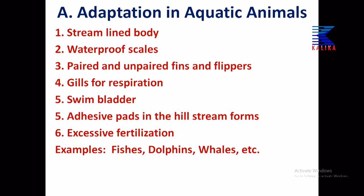Some hill-stream fishes and forms have adhesive pads on the abdominal part or around the mouth, so they are able to attach to stones and rocks and not be washed away by strong upstream currents. They have excessive fertilization — a lot of eggs and a very high degree of fertilization in the water. That is external fertilization. Why excessive fertilization? Because there is a high chance of mortality; if even a small percentage survives, there will be hundreds or thousands of them.